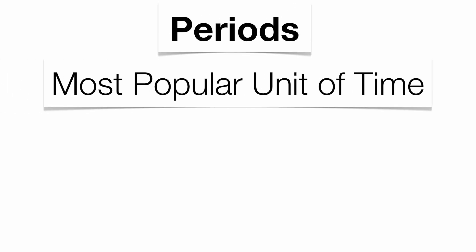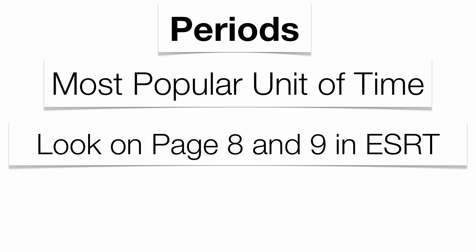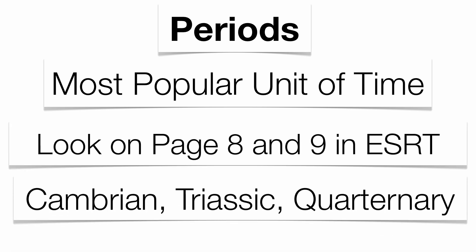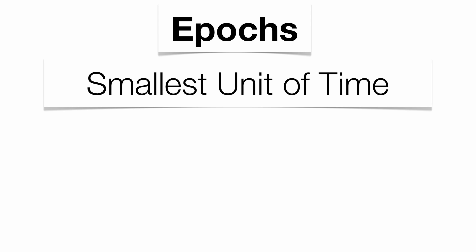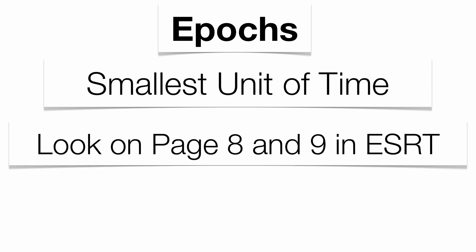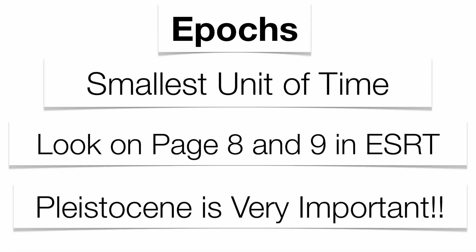Eras are broken up into periods. These are probably the most popular unit of time on the Regents exam, and there are too many to list here, but make sure you look at pages 8-9 in the reference table. The Cambrian, the Triassic, and the Quaternary are some of the more popular ones. Periods are broken up into epochs, and epochs are the smallest unit of time — again, check pages 8-9 in the reference table.